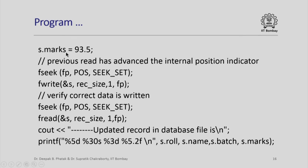We want to change his marks from 91.5 to 93.5. We have the values of Nilamani Rauch's record in structure variable s. We simply set s.marks equal to 93.5. All other elements remain the same value. Now, I wish to rewrite this record in the same position. But please note that the actual act of reading Nilamani Rauch's record has advanced the internal position indicator, so we need to bring it back.